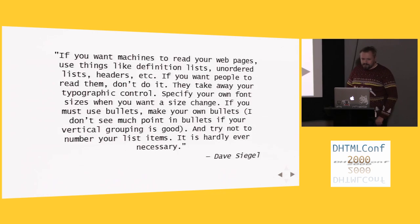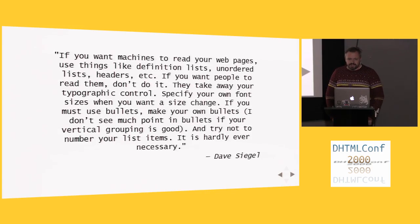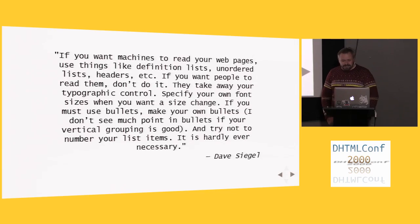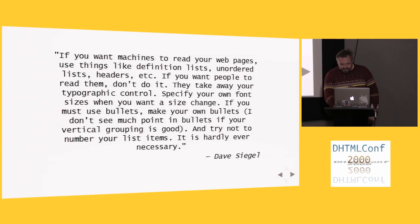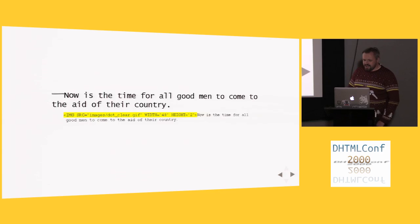You can't really blame him, because at this time he might have been actually the first person ever to think about this from the point of view of a web designer instead of a web developer. And down-and-to-the-right is not very flexible for somebody who came at it from print design. He had a lot of interesting quotes — here's one: 'If you want machines to read your web pages, use things like definition lists, unordered list headers, et cetera. If you want people to read them, don't do it. They take away your typographical control. Specify your own font sizes when you want a size change. If you must use bullets, make your own bullets. I don't see much point in bullets if your vertical grouping is good. And try not to ever number your list items — it's hardly ever necessary.' He had some crazy ideas and probably made Tim Berners-Lee cry a little bit. But again, he was from print design and he just wanted his web pages to look good. He was not apologetic for it at all.